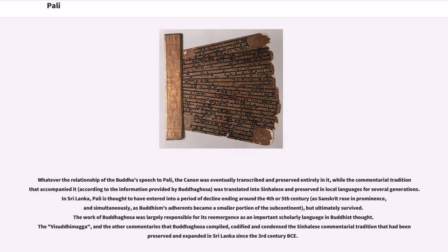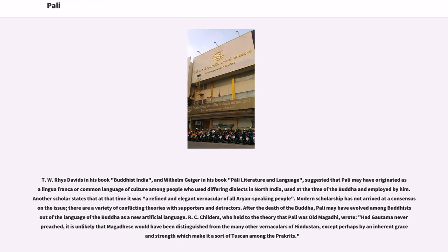In Sri Lanka, Pali is thought to have entered a period of decline ending around the 4th or 5th century, but ultimately survived. The work of Buddhaghosa was largely responsible for its re-emergence as an important scholarly language in Buddhist thought. The Visuddhimagga and other commentaries that Buddhaghosa compiled codified and condensed the Sinhalese commentarial tradition preserved in Sri Lanka since the 3rd century BCE. T.W. Rhys Davids and Wilhelm Geiger suggested that Pali may have originated as a lingua franca among people using differing dialects in North India, employed at the time of the Buddha, described by another scholar as a refined and elegant vernacular of all Aryan-speaking people.